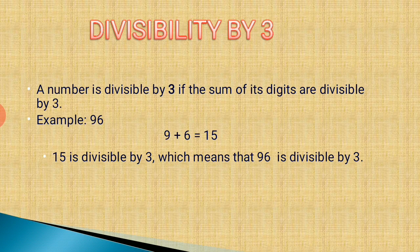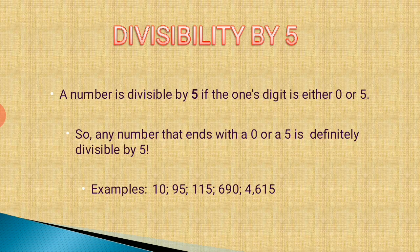Next is the divisibility rule of 5. A number is divisible by 5 if the ones digit is either 0 or 5. So any number ending with 0 or 5 is definitely divisible by 5. Examples: 10, 95, 115, 90, 4915, or any number that ends with 0 or 5.